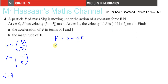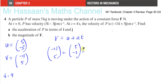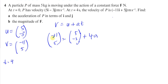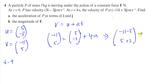So we know that V is the column vector (minus 11, 5), and we know that U is (5, minus 3). We have to find A, so we have plus 4A. We can subtract these two vectors: minus 11 minus 5, and 5 minus minus 3, which is 5 plus 3, equals 4A.